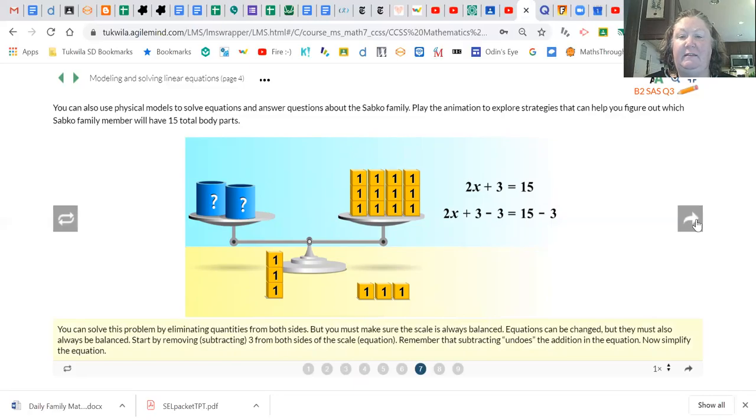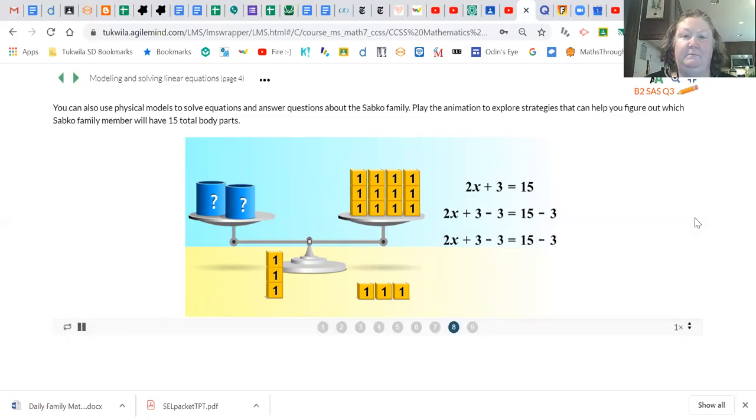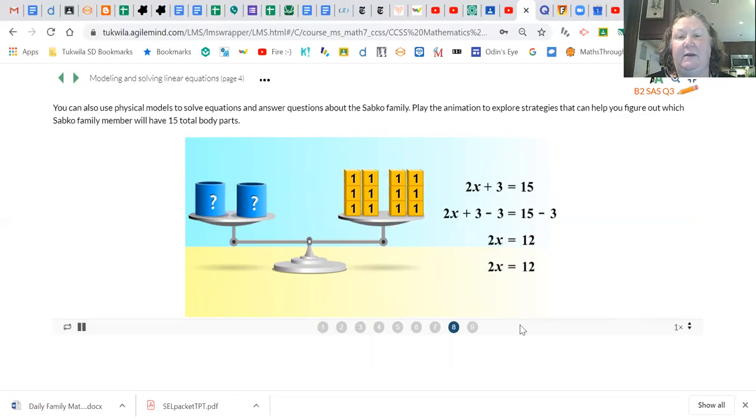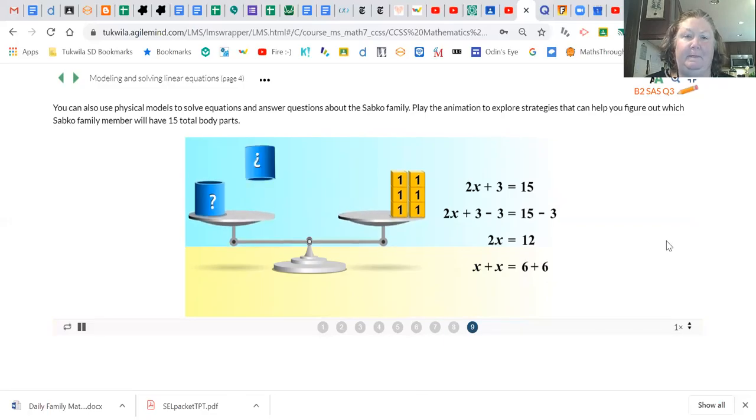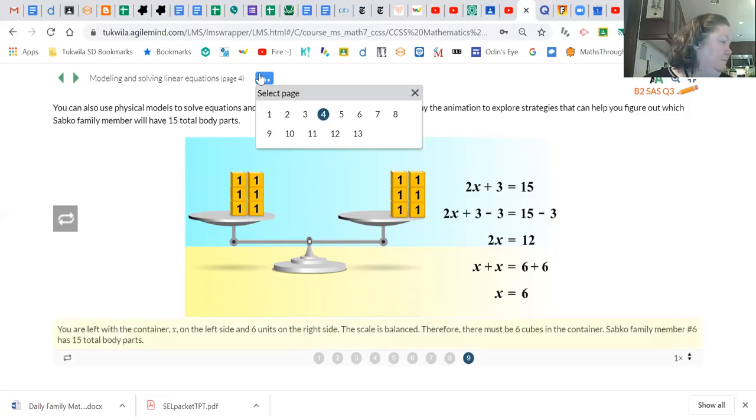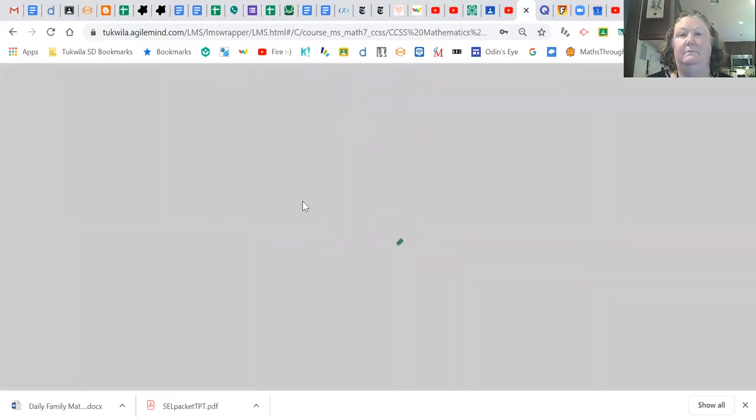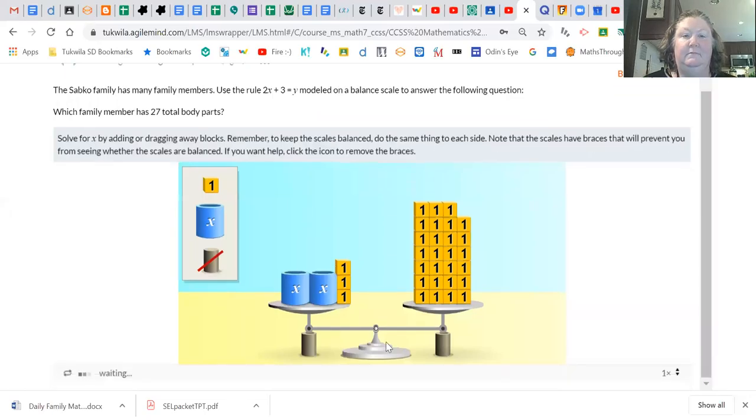Notice how the equation matches the scale: 2x plus 3 equals 15. We're taking away three from both sides to keep it balanced. What does that leave us on the left? Just the two x's, and on the right side we have 12. If x plus x equals this stack plus this stack, then each stack has six in it, meaning that x equals six.